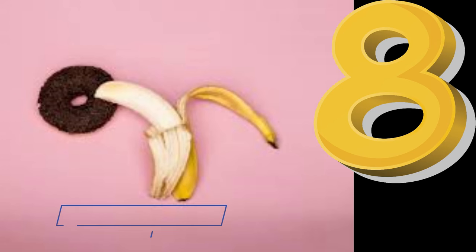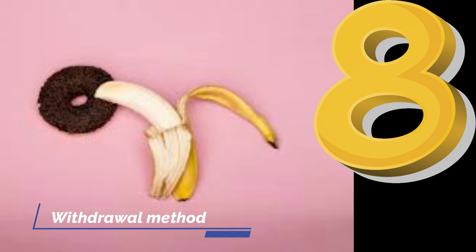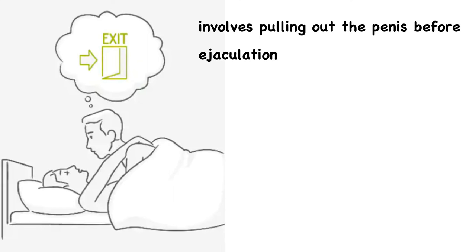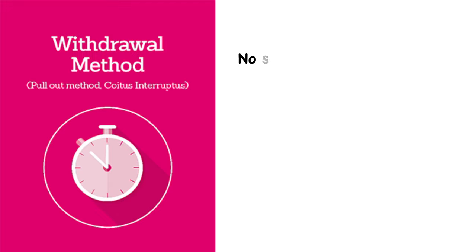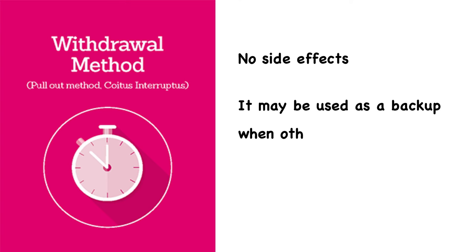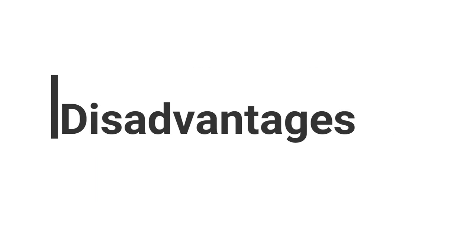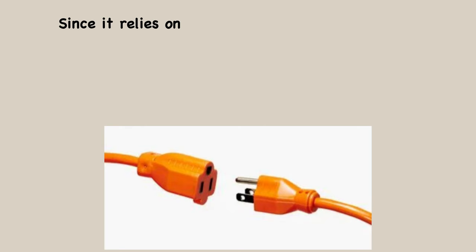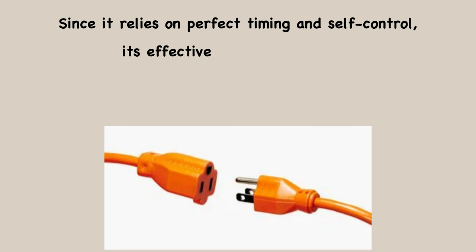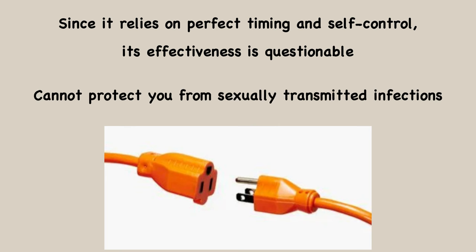The eighth and last method is the withdrawal method. This involves pulling out the penis just before ejaculation to prevent sperm from entering the vagina. The advantages are that it has no side effects and may be used as a backup when other methods fail, such as when a condom breaks. The disadvantages are that since it relies on perfect timing and self-control, its effectiveness is questionable, and it cannot protect against sexually transmitted infections.